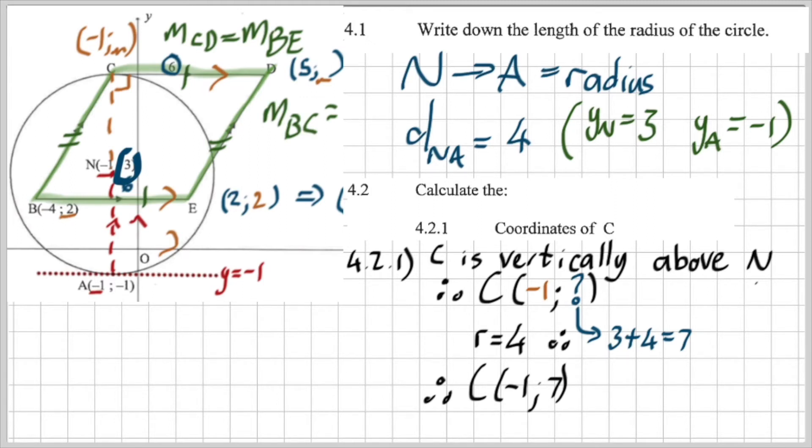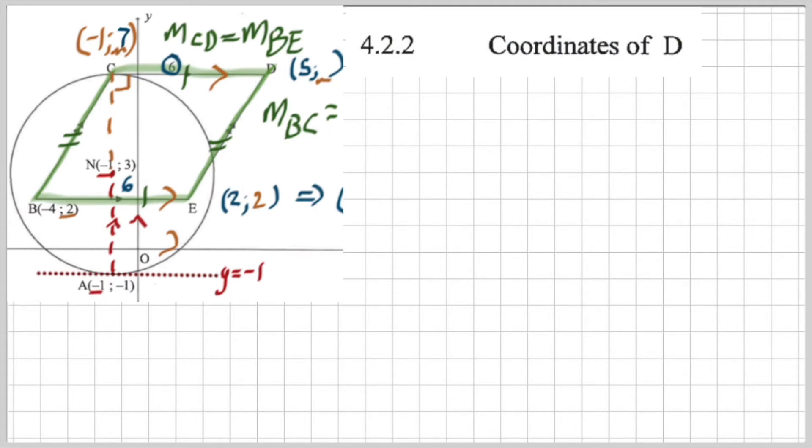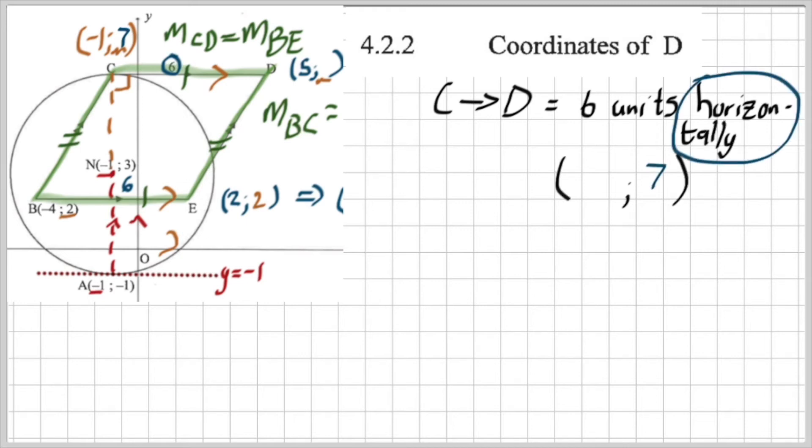Looking at the next question, question 4.2.2. If you look on the sketch, you will see that I've actually now written in the coordinates for C, negative one comma seven. The next question is coordinates of D. First of all, I'm going to move horizontally. That's important, those words. Because then the Y values are going to remain the same. And the X value, remember my reasoning, it's six values to go from C to D. So negative one plus six. And therefore, D's coordinates is five comma seven.